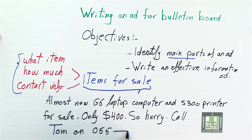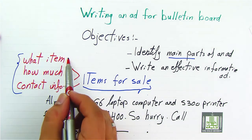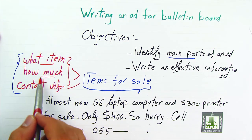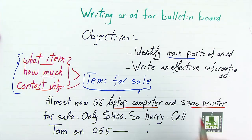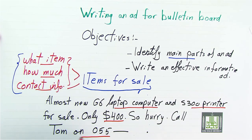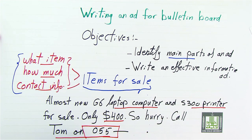Now let's compare if we have met these three parts. What item? The item is laptop computer and printer. How much? 400. Contact information? The number is provided here. That's all for today's lesson. Thank you very much, my students, for your careful listening, and see you next lesson. Thank you very much.